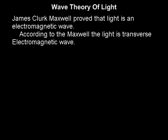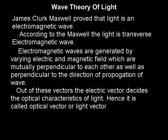Later on, it was proved that light is not a mechanical wave. James Clerk Maxwell proved that light is an electromagnetic wave. According to Maxwell, light is a transverse electromagnetic wave. Electromagnetic waves are generated by varying electric and magnetic fields. These fields are mutually perpendicular and also perpendicular to the direction of propagation of the wave. Out of these two vectors, the electric vector decides the optical characteristics of light; hence, it is called the optical vector or light vector.